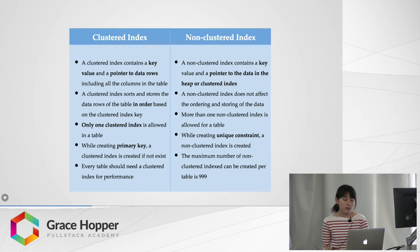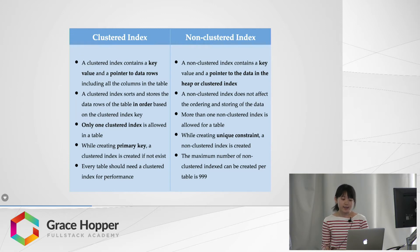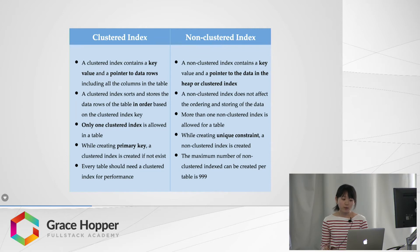When creating a primary key, a clustered index is created if no clustered index exists. When creating a unique constraint, a non-clustered index is created by default. That's why, in the previous example, the order_item table has a primary key index and a unique index, which I did not build manually.